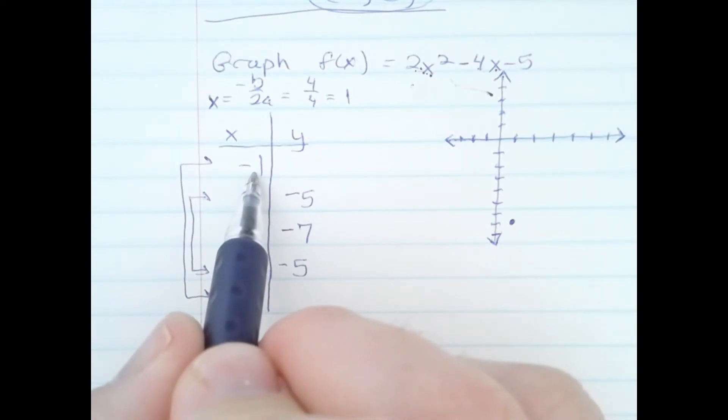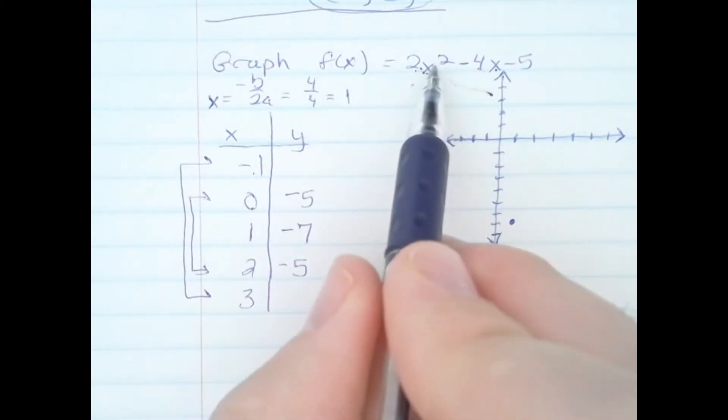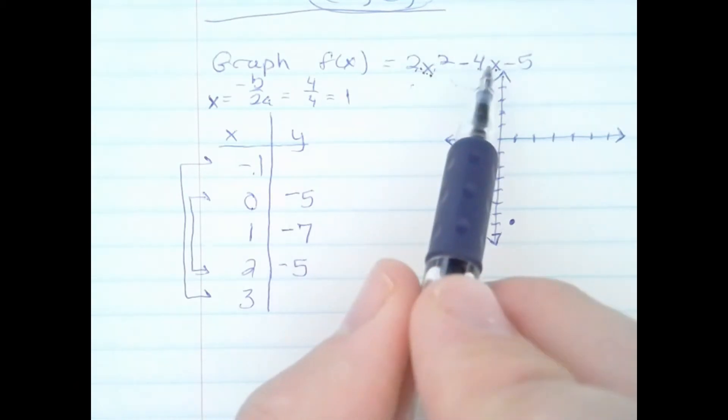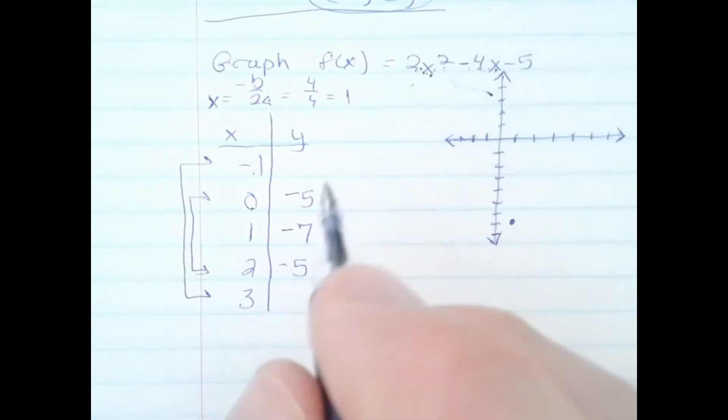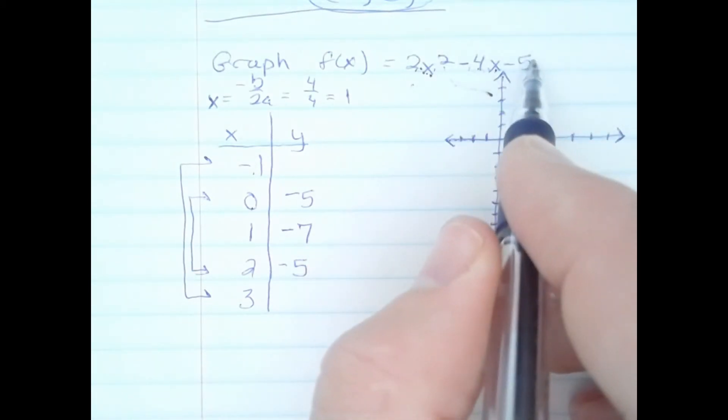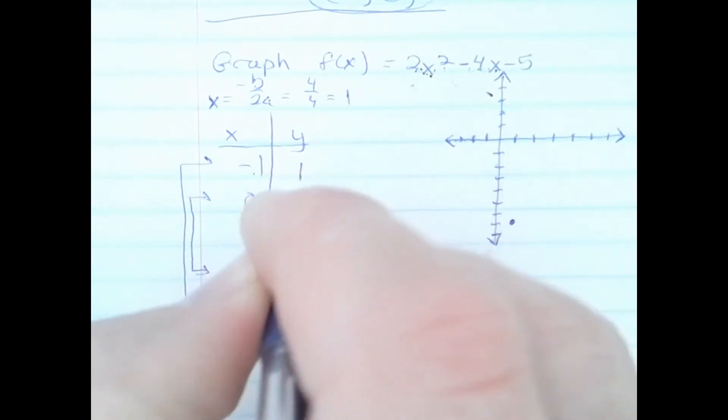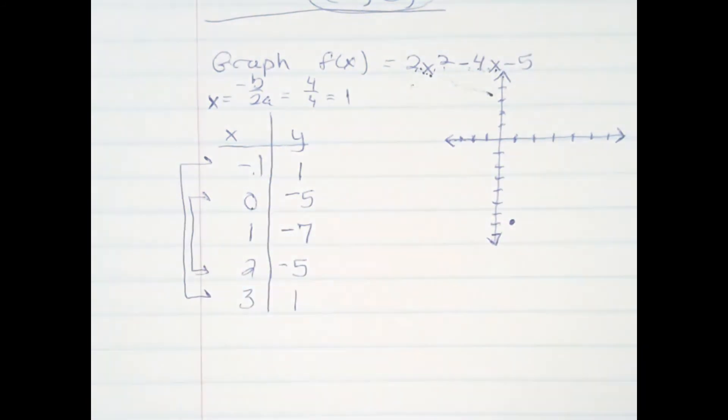Now, plugging -1 in here, -1 squared is 1, 1 times 2 is 2. And then I have 4 times -1, -4, minus a negative 4, I have 2 + 4, 6, and then I have a minus 5, which is 1. By symmetry, this point down here is also 1.